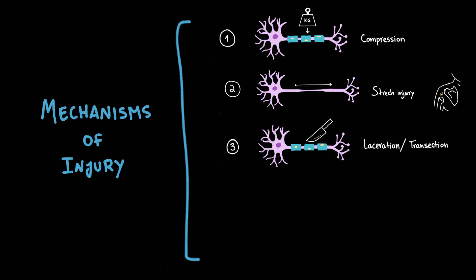Fourth, another important mechanism is ischemia, meaning loss of blood supply. Just like any other tissue, nerves need oxygen and nutrients delivered by small blood vessels called the vasa nervorum. When blood flow is interrupted, for example, due to trauma, vascular disease, or compartment syndrome, the nerve fibers suffer.